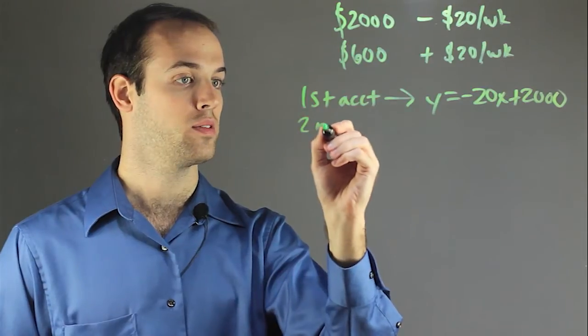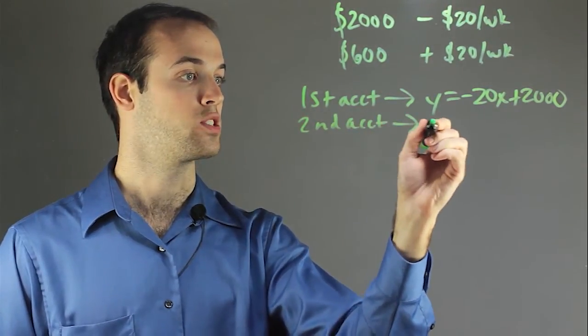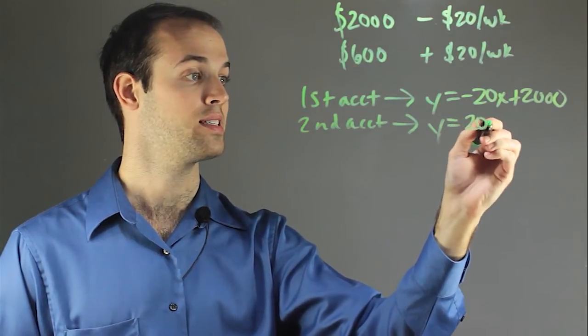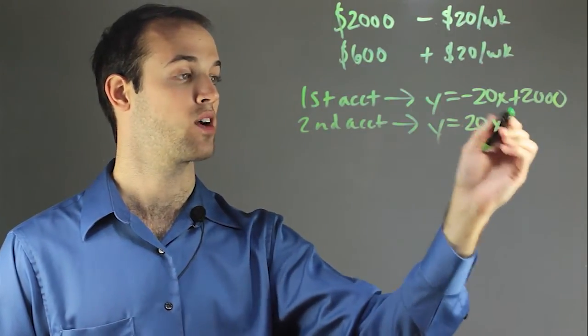The second account is going to be growing $20 a week. So I know that's going to be positive 20x and it starts out at $600.